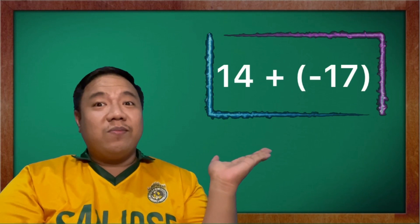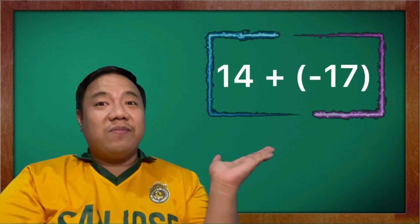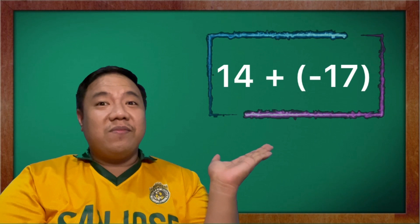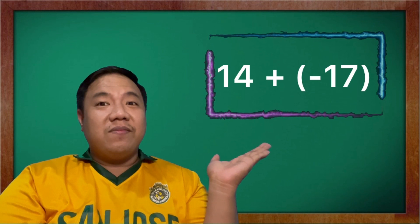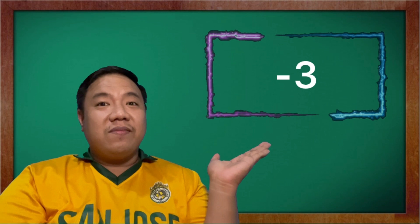So 17 minus 14 will give you an answer of 3, and since 17 is the higher number, our final answer will be negative 3.